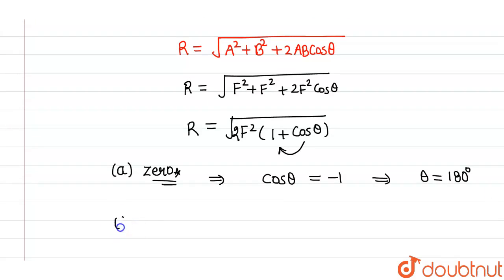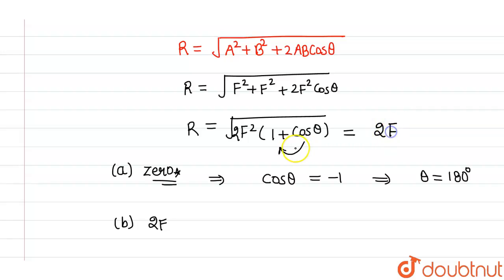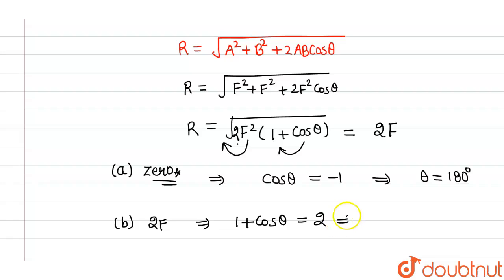Now in the second part, we are asked that the resultant should be equal to 2F. For the resultant to be 2F, the value of (1 + cosθ) should equal 2, because f² comes out of the root as f, and this 2 multiplied by another 2 gives 4, whose root is 2. So 1 + cosθ = 2, which implies cosθ = 1, and from here we get that θ equals 0°.